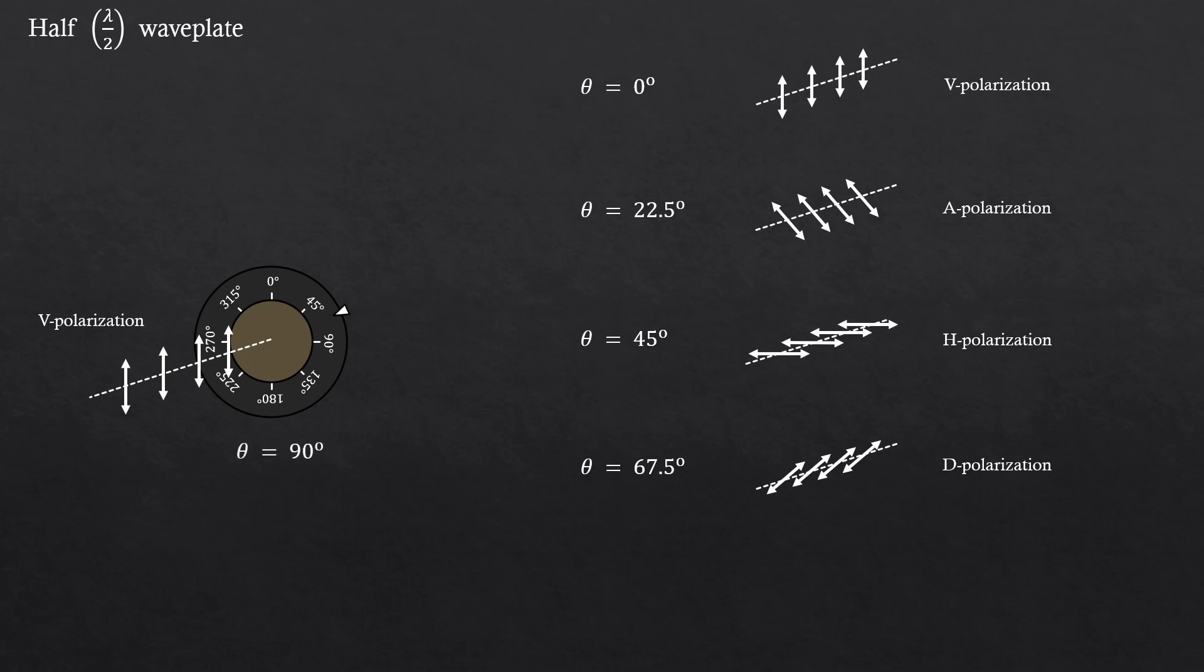And lastly, the 90 degrees will give us back the vertically polarized light. Now you see that a half wave plate can create only horizontal, vertical, diagonal, and anti-diagonal polarizations. So a half wave plate cannot create circular polarizations. Remember that, okay?